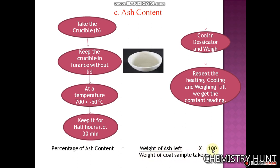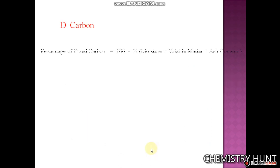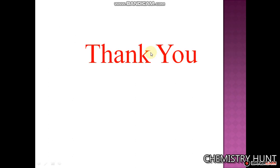Finally, the fixed carbon is calculated as: 100 minus the sum of percentage of moisture, volatile matter, and ash content. So this was all about proximate analysis. Thank you.